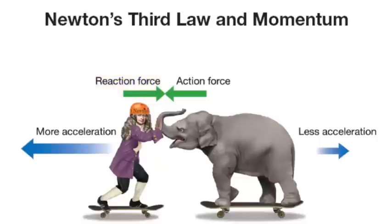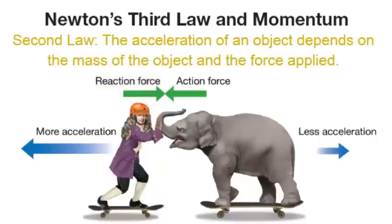Now here's the thing. If you analyze the second law, we're going to have more acceleration with Newton and less acceleration with the elephant. The reason why has to do with the masses. If your F is the same, the reaction and action force are equal, then we're just dealing with the mass and acceleration.